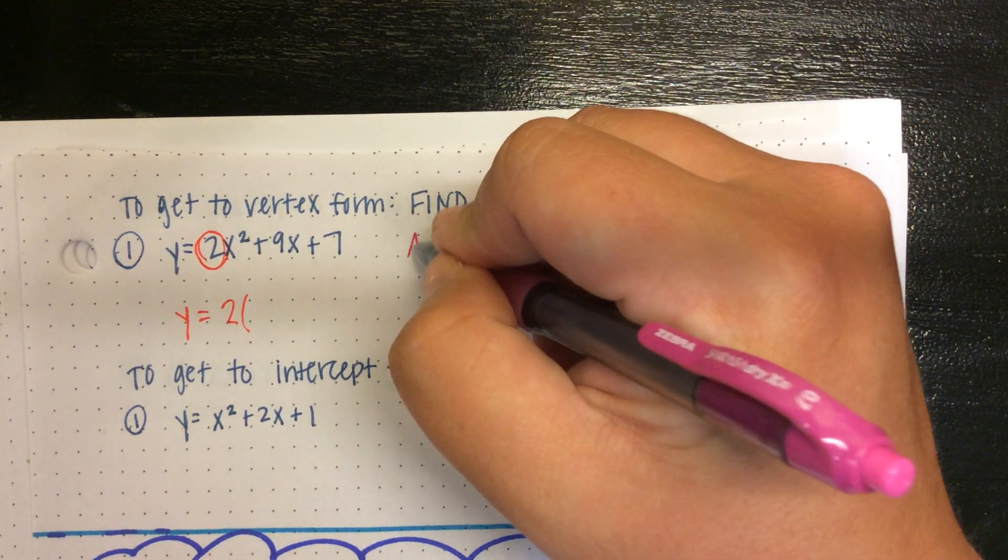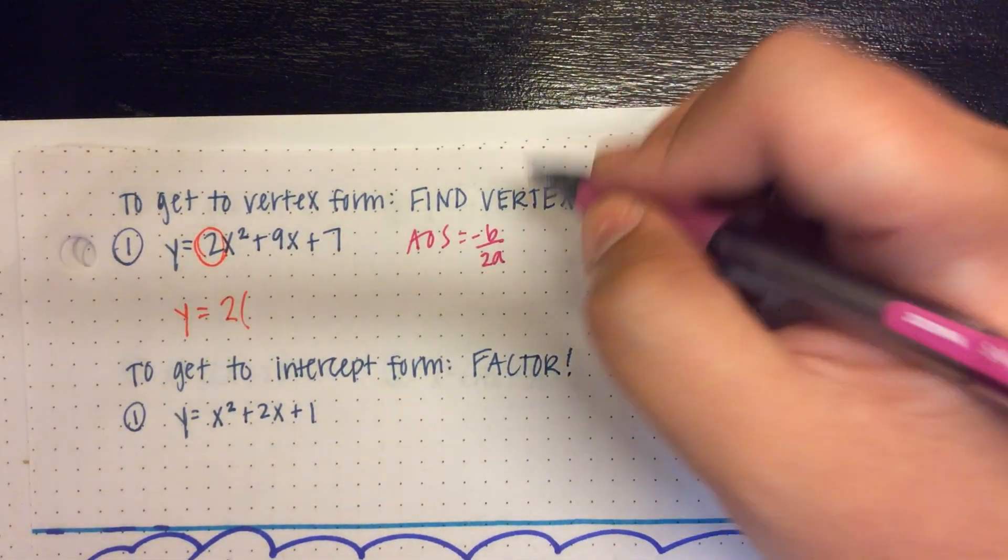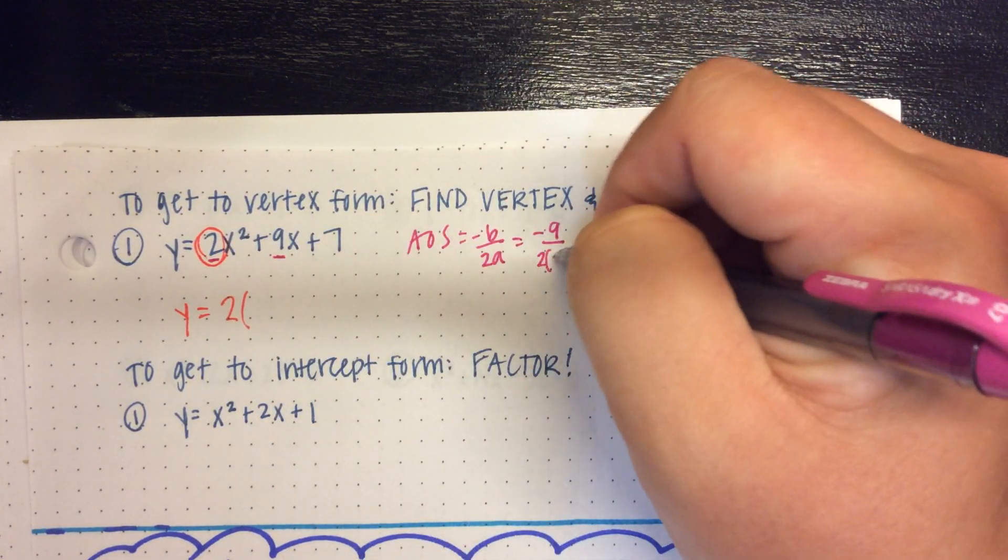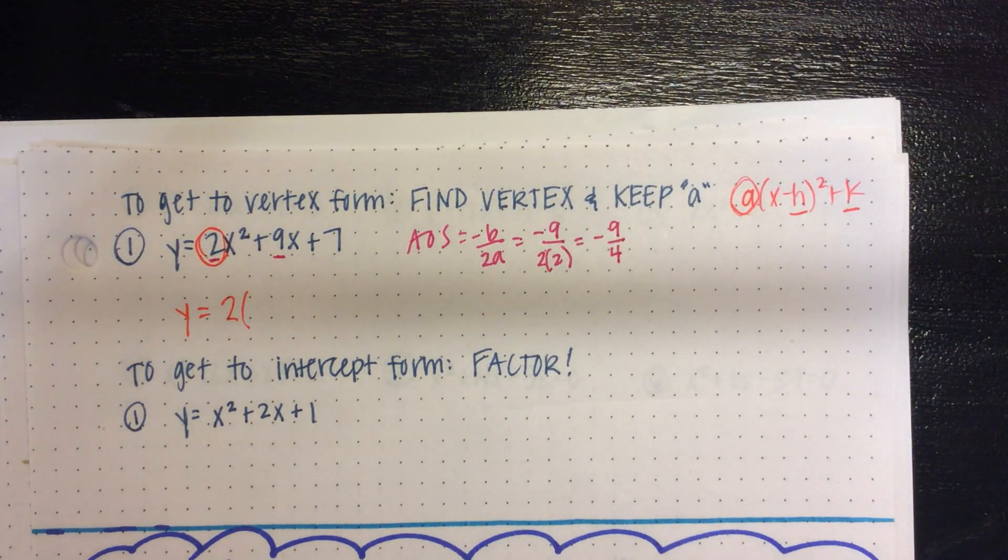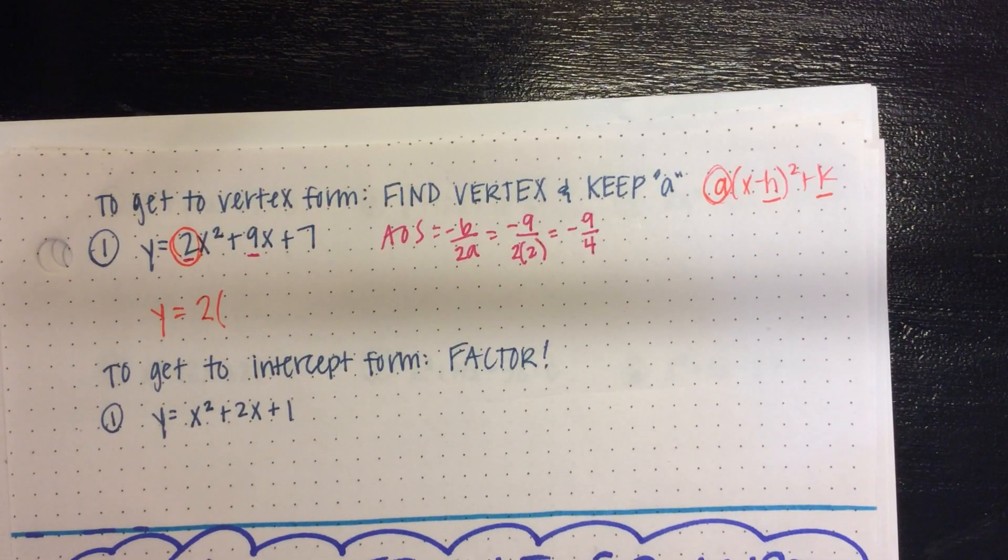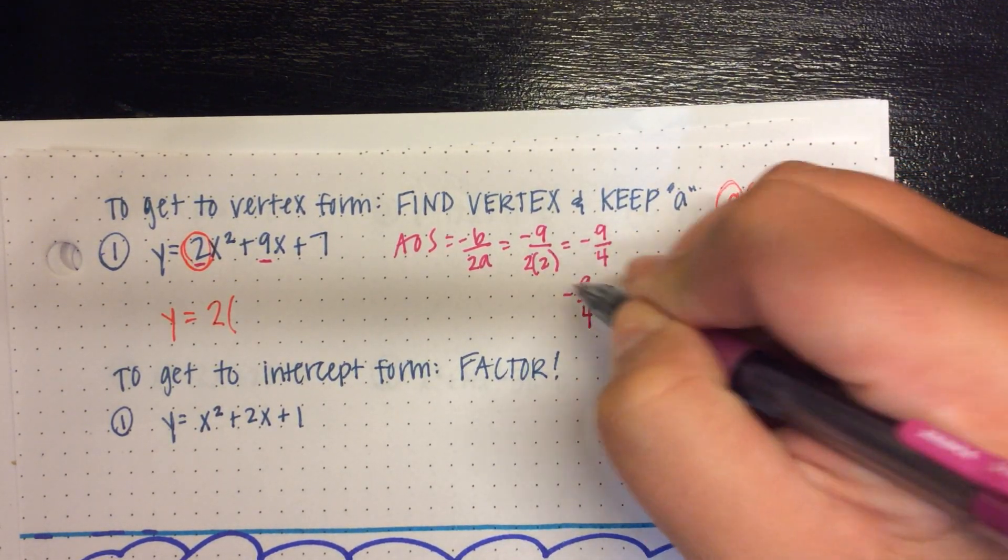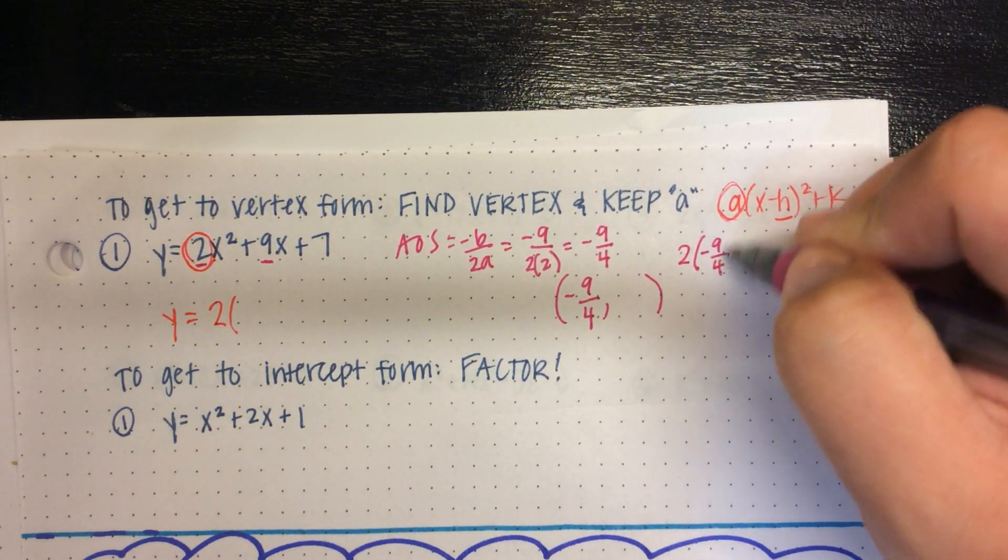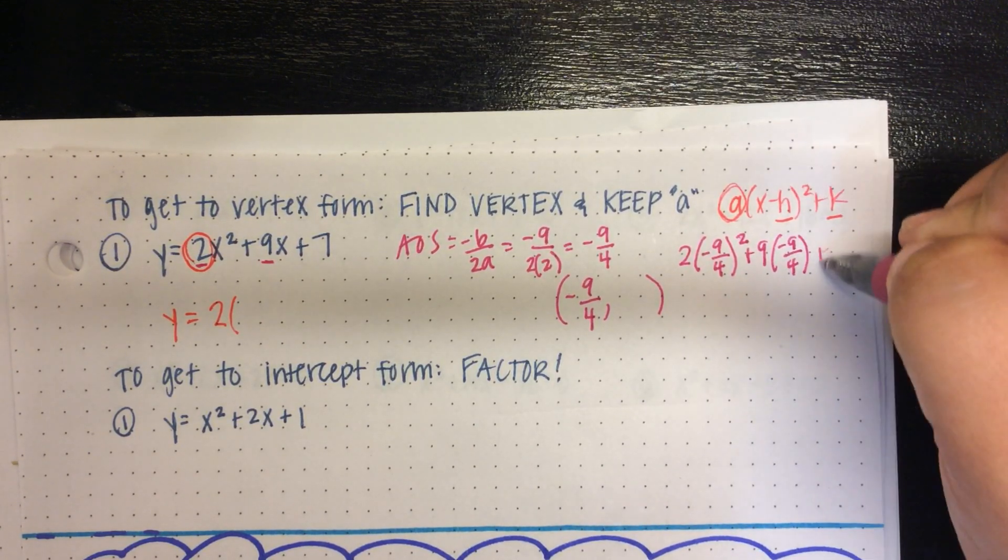And to find the vertex, we start with the axis of symmetry, which is negative b over 2a. So in this case, my b is 9. So I have negative 9. And then my a is 2, so over 2 times 2. So I get negative 9 over 4. And that's gross. Could have made a nicer one for us. All right, but there's the x value of my vertex. The y value, I'm going to have to plug in. So I have 2 times negative 9 over 4 squared plus 9 times negative 9 over 4 and then plus 7.